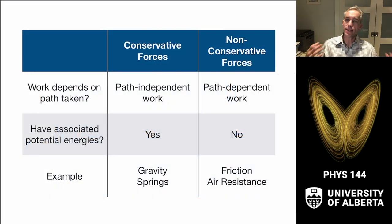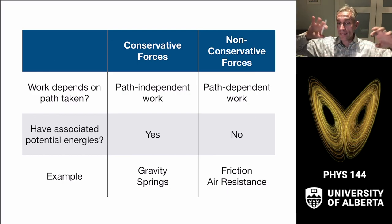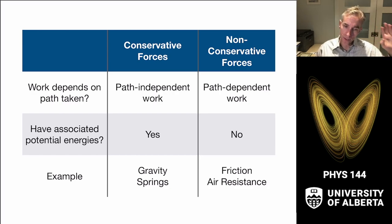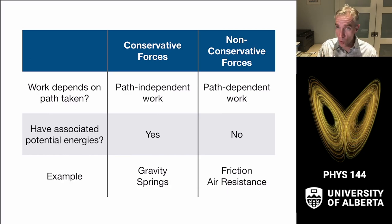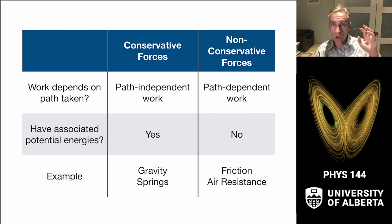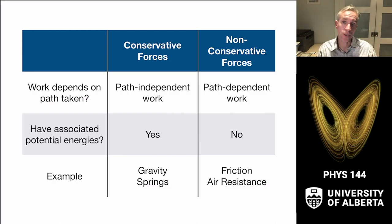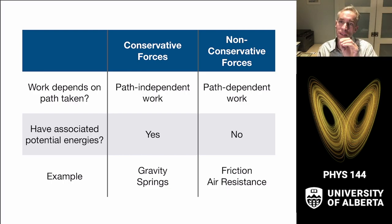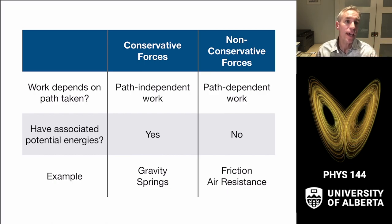To conclude: we broadly classify all forces into two categories. Conservative forces have work independent of the path taken — examples are gravity and springs — and they have associated potential energies. Non-conservative forces have work that depends on the path taken; a longer path means more work, as with friction or air resistance. No path-dependent force can have a potential energy, because its work depends on how you got there, not just the starting and finishing positions.